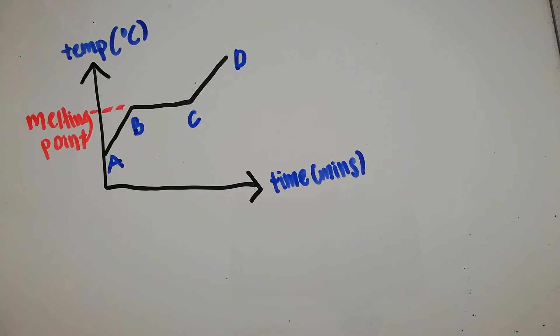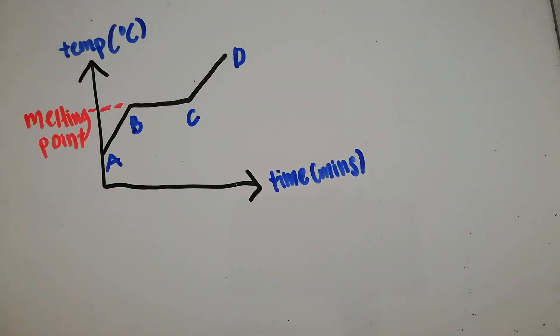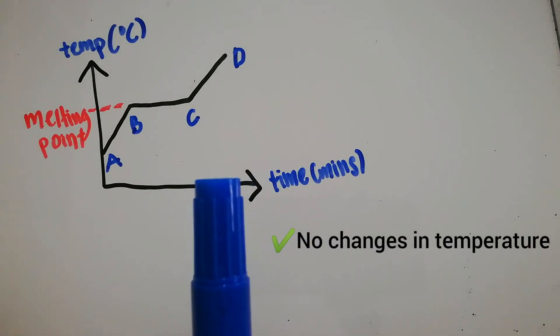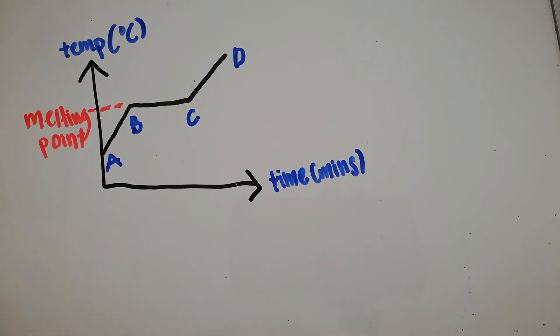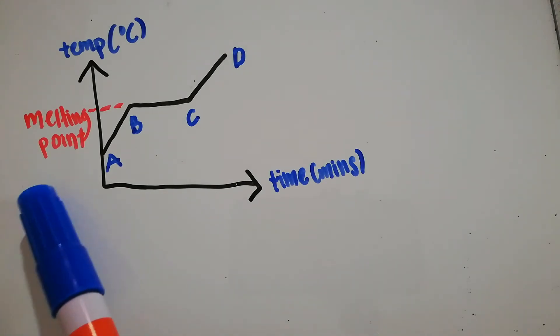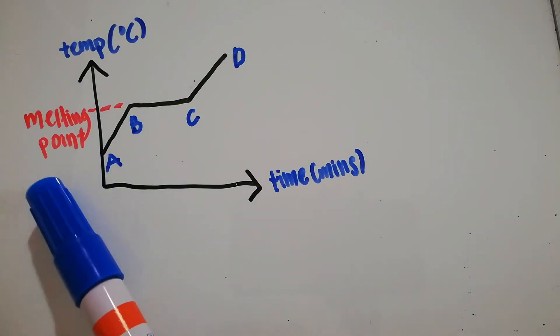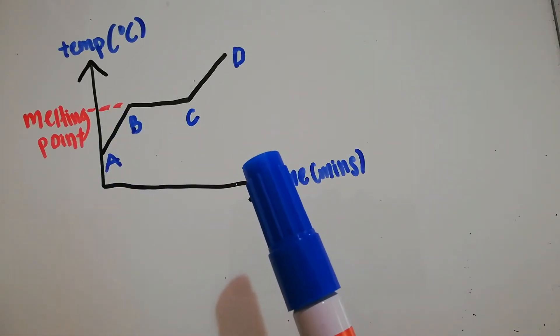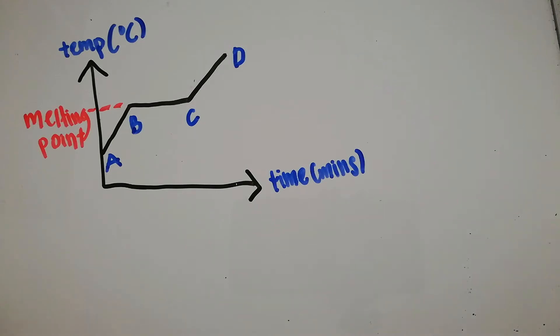From B to C, you can see there's no changes in temperature, which is constant. It is a melting point because at this point melting occurs. Why is there no change in temperature? Because the heat energy absorbed by the particles is used to overcome the attraction force between particles until solid changes to liquid.